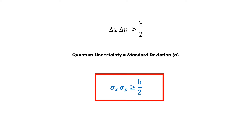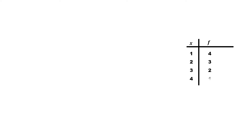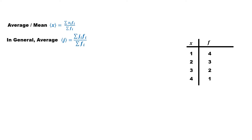Now, let's understand what standard deviation means with an example. Suppose we have a dataset for the measurement of a quantity. The average or mean value of that dataset is given by this equation. The difference between a measured value and its average is called the deviation in the measurement of that quantity, and it is represented by delta.